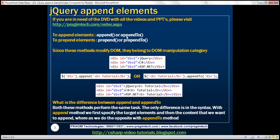So what's the use of the appendTo method? AppendTo performs the same task, but the main difference is in the syntax. With the append method, we first specify the target elements to which we want to append something, and then we specify the content. Whereas with appendTo, we first specify the content that we want to append, and then the target elements to which we want to append. That's the only difference between these two methods.